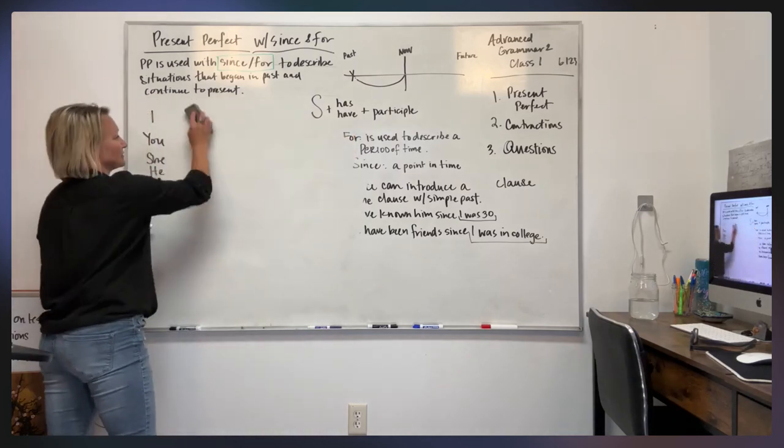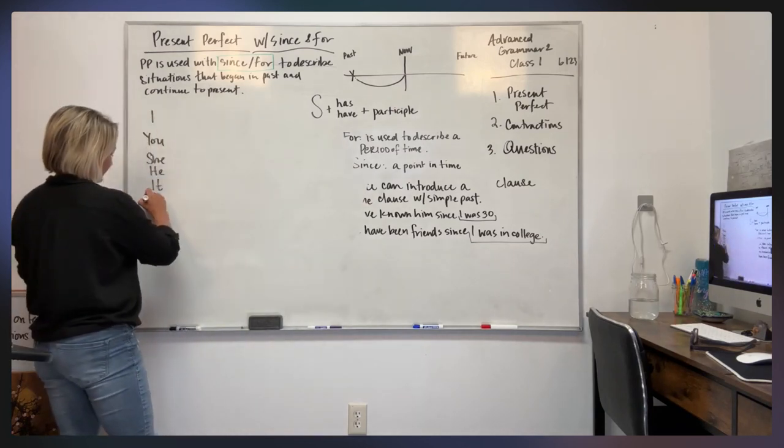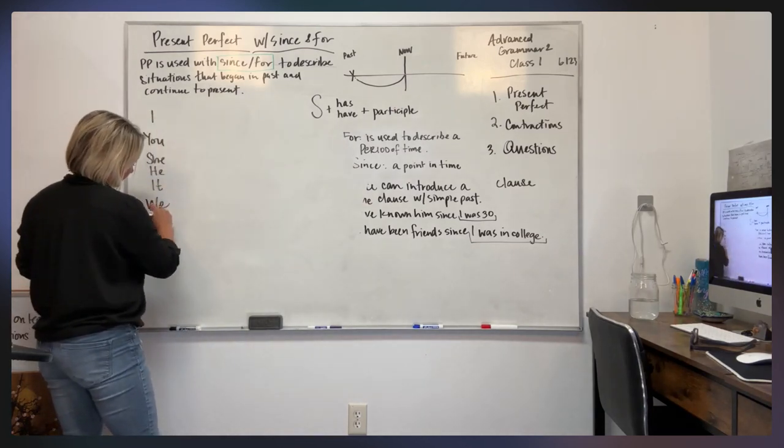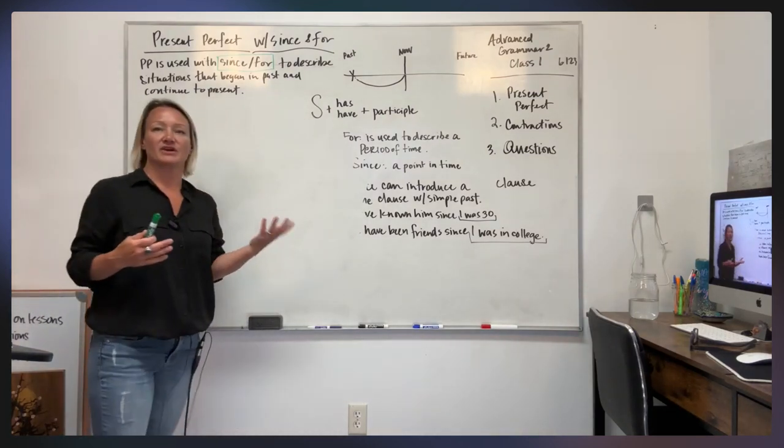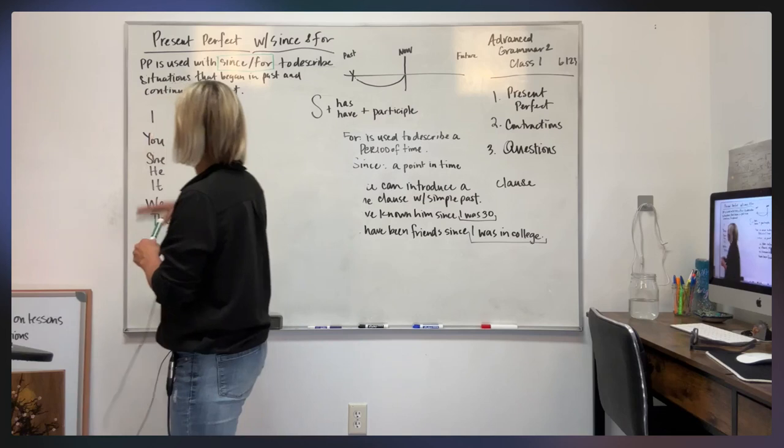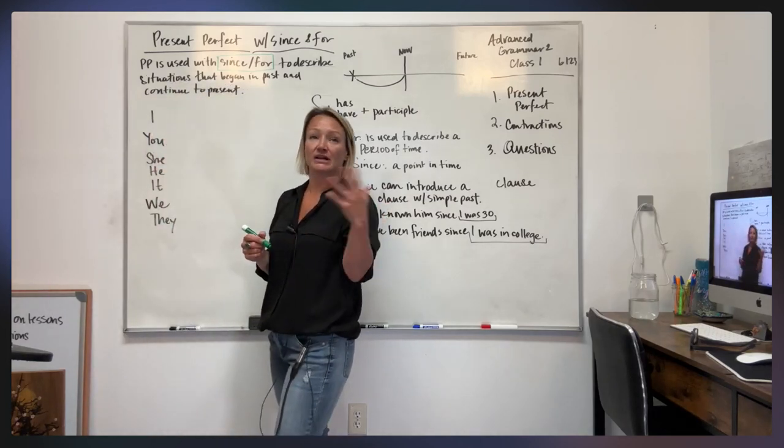Okay. Actually, I'm going to put these all over here so we can see all of them. And they, okay. So let's put the correct forms of the verb to have in with the subject. So I, you, she, he, it, they, or we, and they.